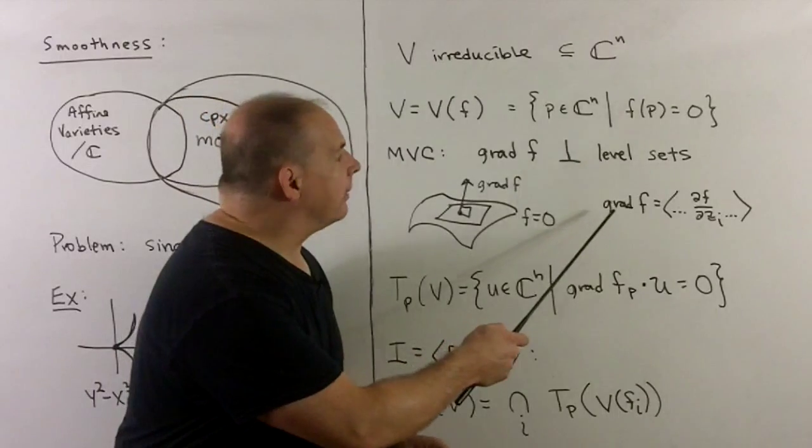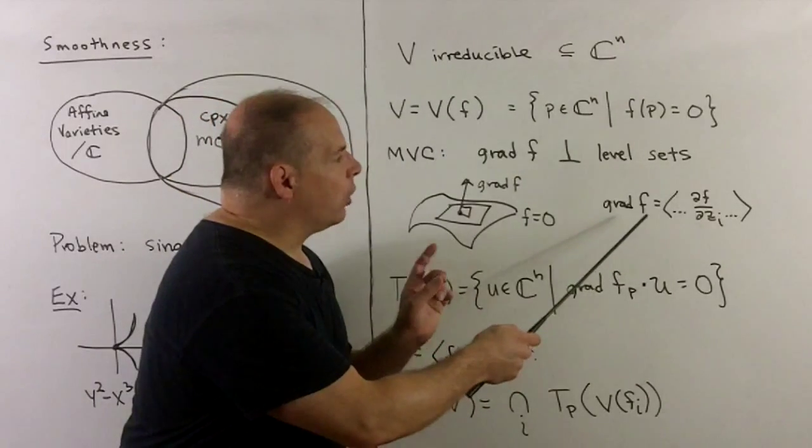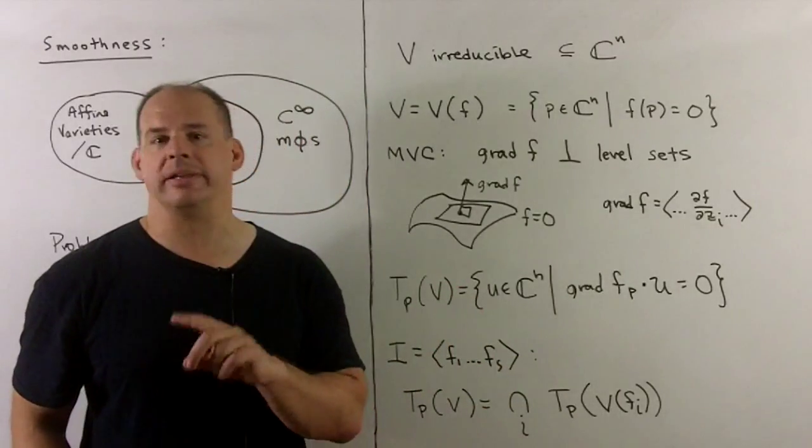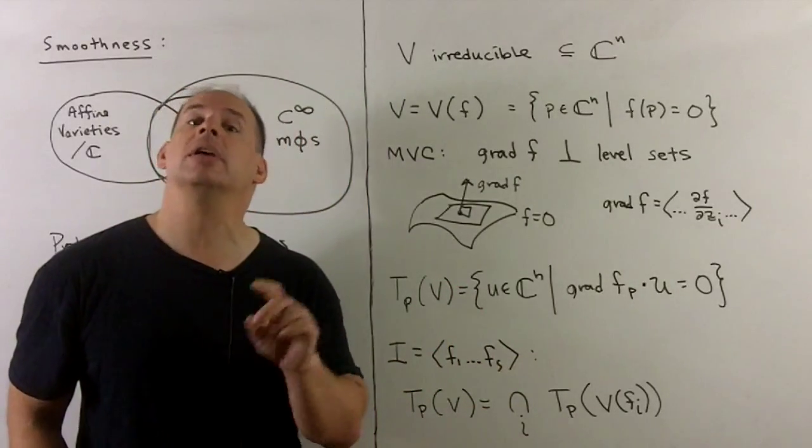Our gradient—we have our polynomial—is just given by loading up with all the different partials in our different variables. And to emphasize complex, we'll use z as a variable.